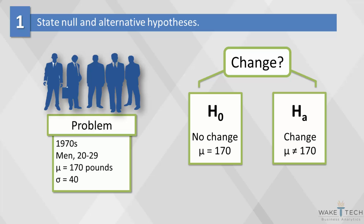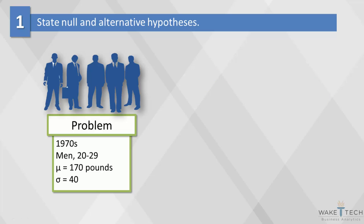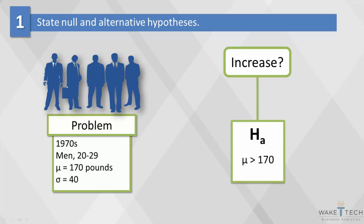This is called a two-sided test, the most common form of hypothesis testing. We can also do a one-sided test in which we ask if weight has increased over time, so the alternative hypothesis would be mu is greater than 170 pounds.